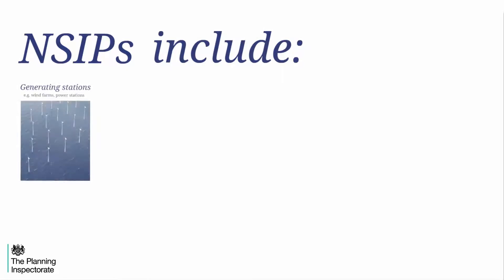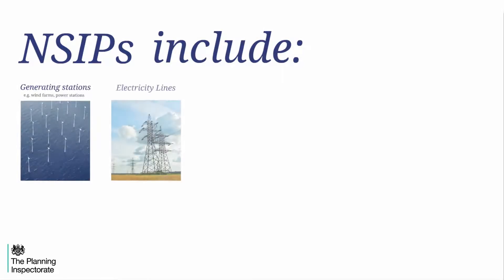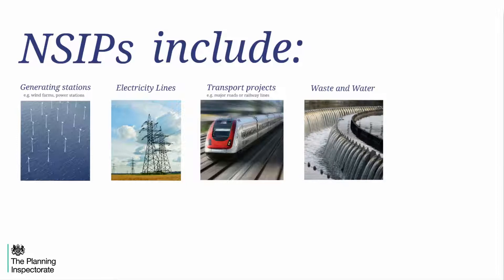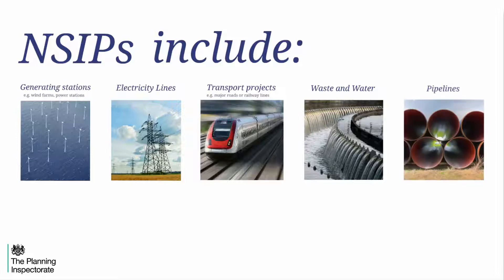Generating stations, such as wind farms and power stations; electricity lines, such as new power lines and pylons; transport projects, such as the building of new roads or railway lines; waste and water, such as the construction of a reservoir or wastewater treatment plant; and pipelines, for example to carry natural gas between a power station and the National Transmission Network.